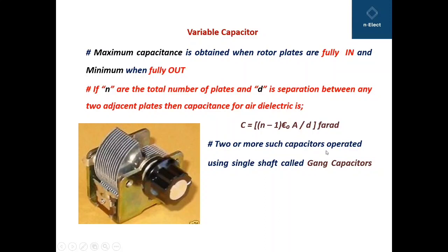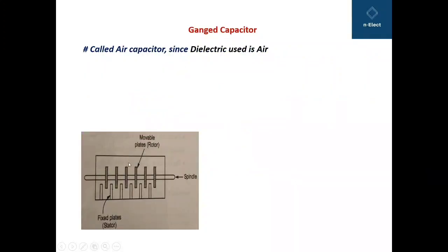Two or more such capacitors — here only a single section is shown — if operated using a single shaft, are called gang capacitors. Here you can see a pictorial representation of a gang capacitor: the fixed plates are sets of stationary plates, and the movable or rotor plates are connected to a single spindle or knob. It is also called an air capacitor since air is the dielectric between the adjacent plates.